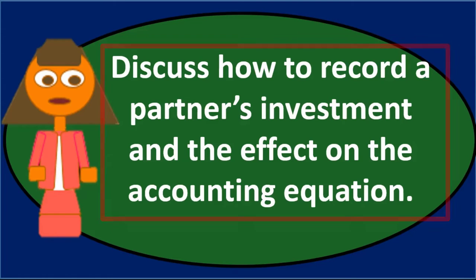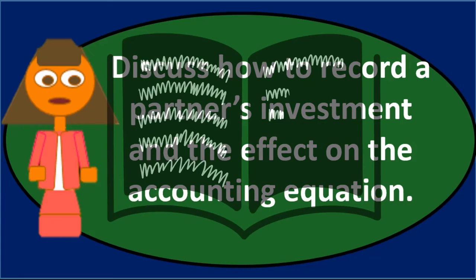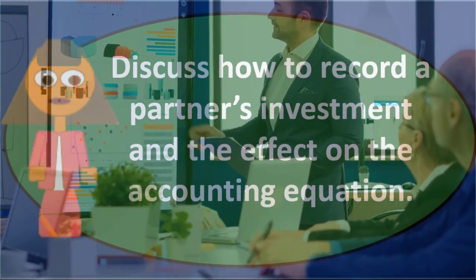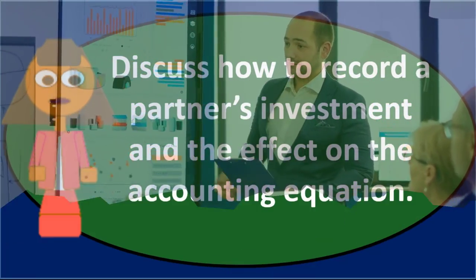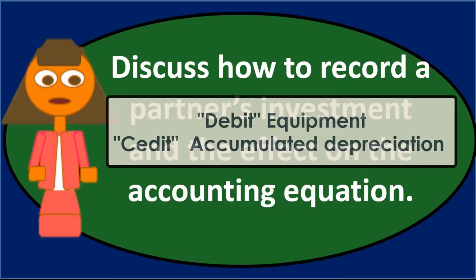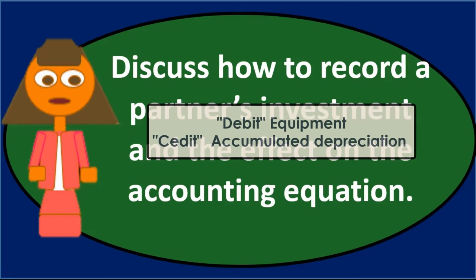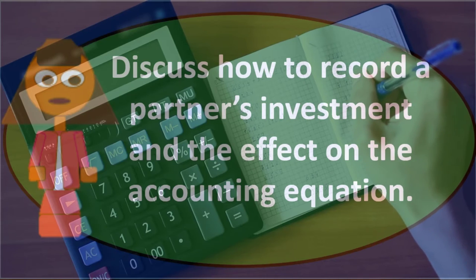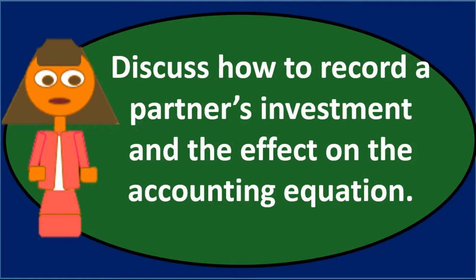Even though there's not a market sale per se, what the equipment does not go on the books for is simply the book value it had on the books of the investing partner. It goes on the books kind of like a new purchase — as if we purchased used equipment. So we're typically not going to have a debit to equipment and a credit to accumulated depreciation; we just put it on the books as equipment at that point in time.